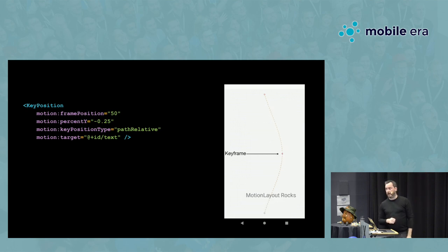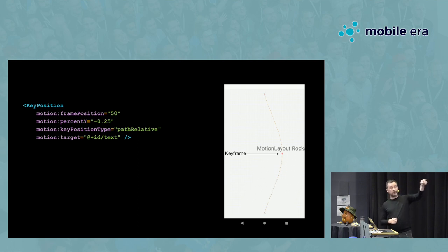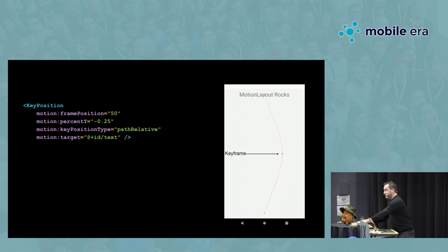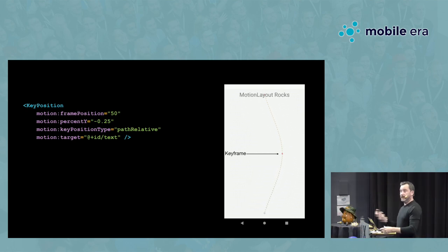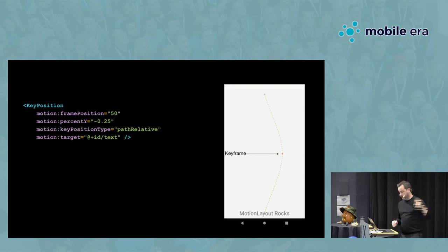Quick question — given that we're doing a %Y translation and the curvature of the keyframe, who thinks this is actually working correctly, and who thinks this might be a bug given that it's %Y and it's going in the left-hand direction? This is actually working as intended, and we'll explain why — it's all to do with the coordinate systems we're using.